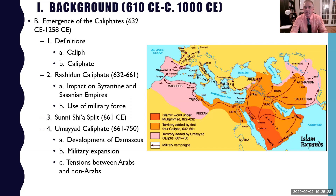We start first with the Rashidun Caliphate, from 632 to 661 CE. On the map, the red in the Arabian Peninsula with Medina and Mecca represents Muhammad's political territory. Then you have the spread into the orange, and you can see how rapidly Islam spreads throughout the region — that is your Rashidun Caliphate.